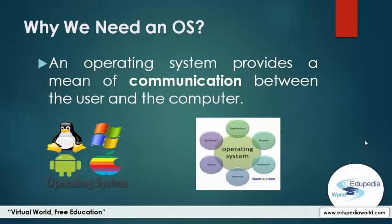The next important question: why do we need an operating system? Can't we use a machine without an OS? The answer is no. As ordinary people we can't, because we cannot speak to a pile of silicon chips, metals and plastics in a language that we can understand. If you want to communicate, you have to speak to them in their language — the machine language. It's a matter of voltages, zeros and ones. As 9th graders, we don't need to go into that low level because we have something simple and easy to use: operating systems. It provides a means of communication between the user and the computer. The OS is the communicator who knows the machine language and sends our human instructions to the hardware.